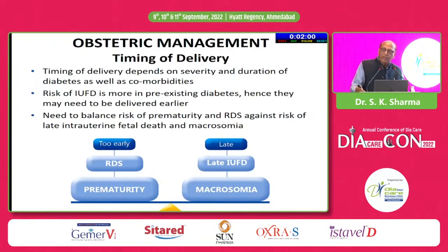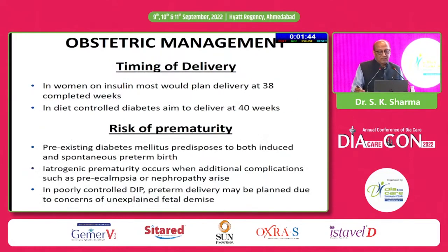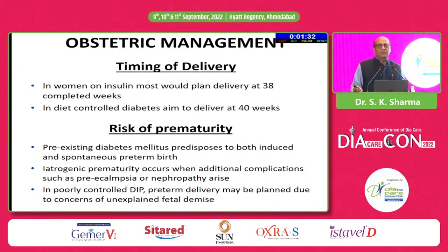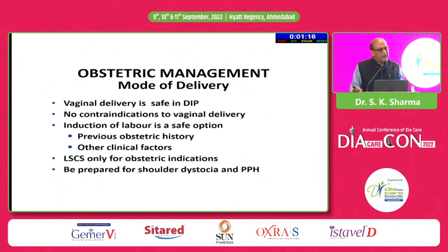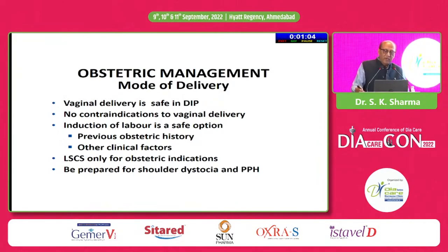An important point about timing of delivery is that if you deliver too early, respiratory distress syndrome and prematurity are the problem. If you go for late delivery, then stillbirth, intrauterine demise of the fetus, and macrosomia are the concerns. Timing of delivery is very important. If the patient is well controlled on a little amount of insulin and things are okay throughout pregnancy, then 38 to 40 weeks is acceptable. If anything bad is happening for the fetus, delivery at 38 weeks is preferred. Vaginal deliveries can be done; caesarean sections are required only for obstetric indications, not simply because the lady is diabetic.